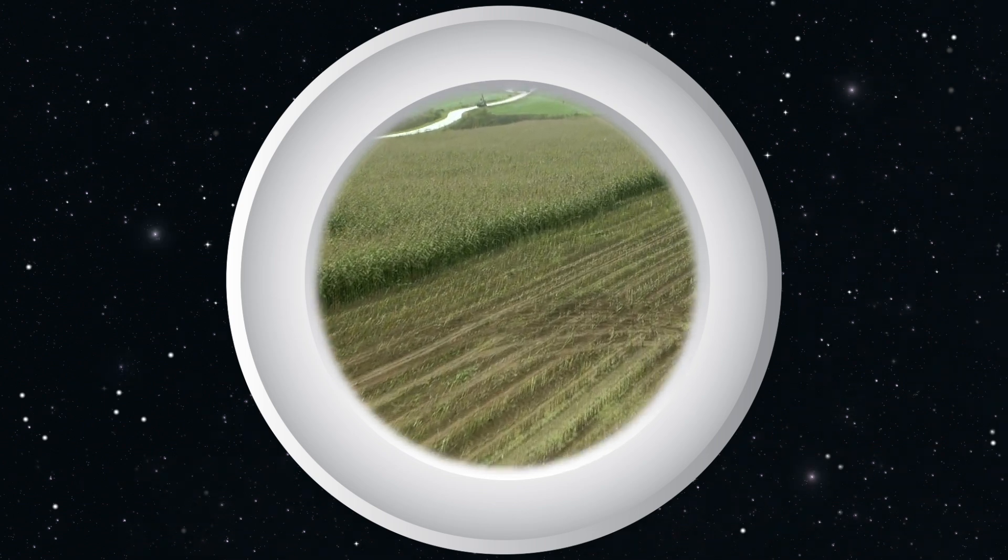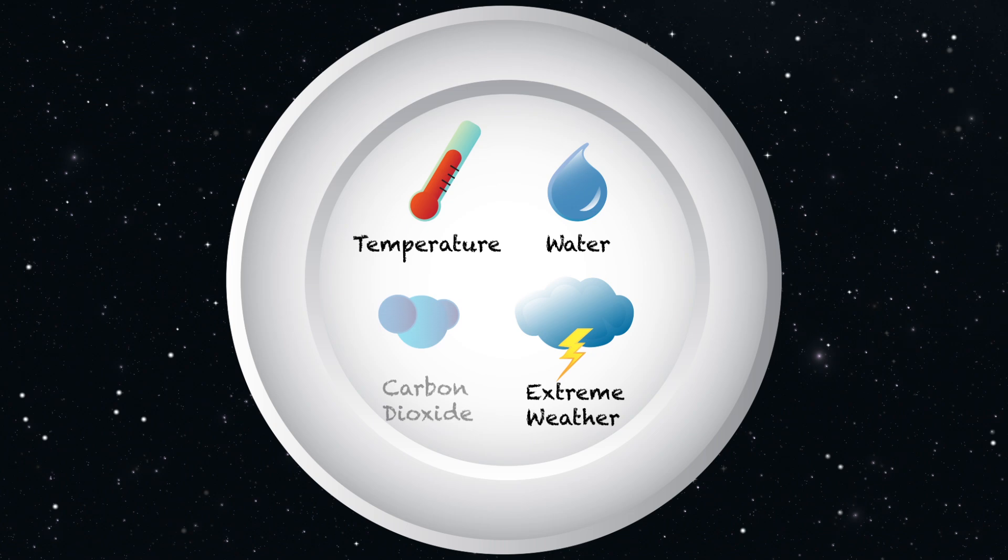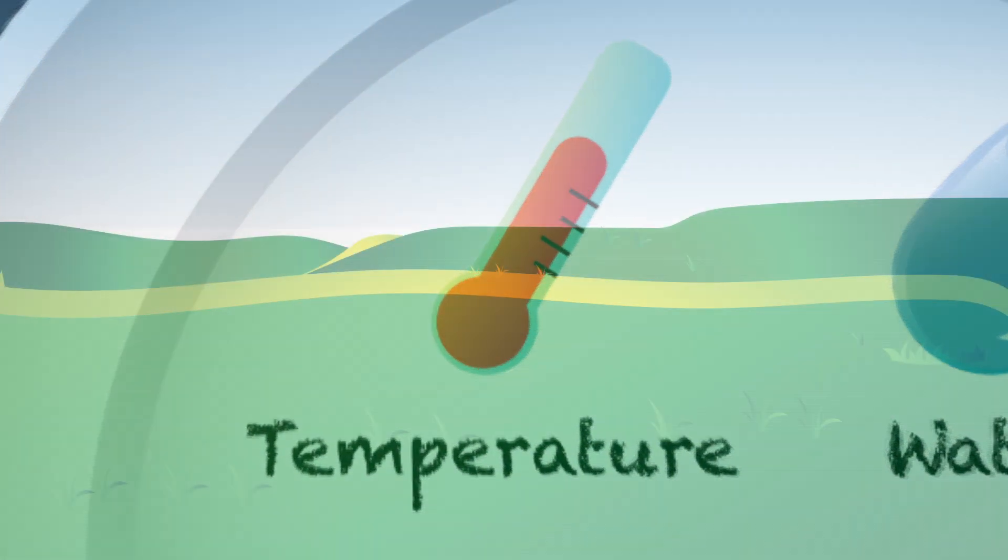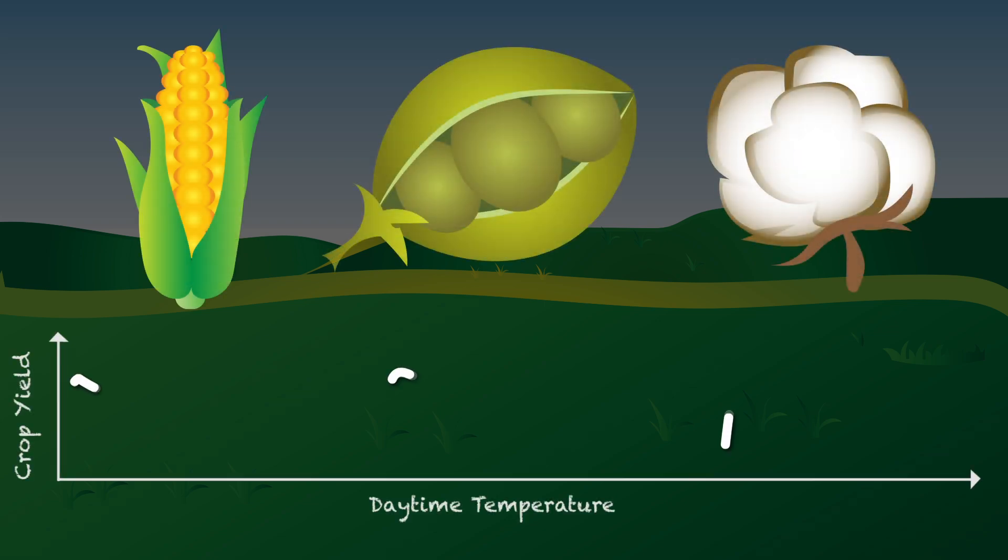Climate change will hit our food production system in four ways, through temperature, water, extreme weather, and carbon dioxide. Most of us will feel temperature first, so will crops. Productions of staples like corn, soybeans, and cotton are projected to increase at first, then decrease sharply as the average growing season temperature keeps getting warmer.